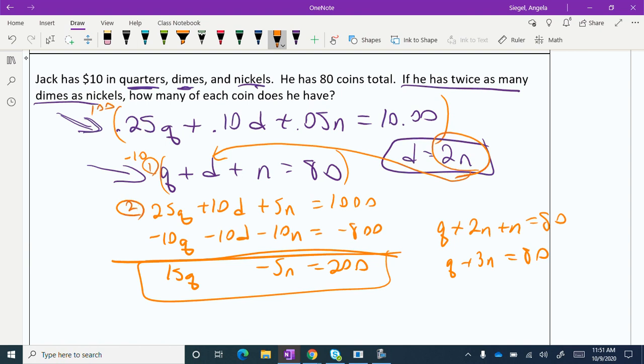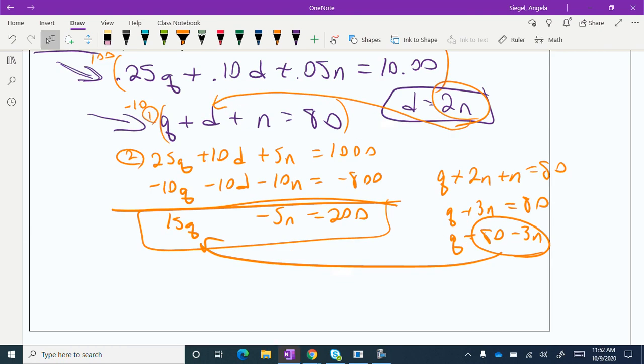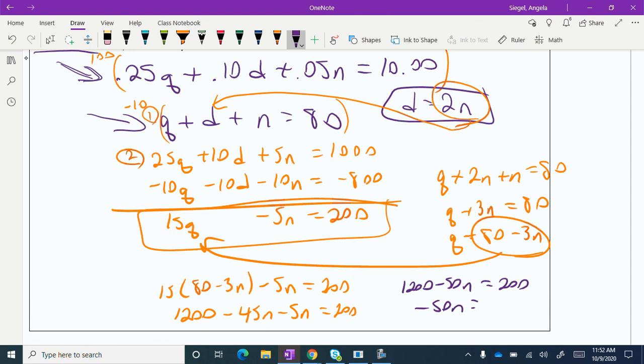I think what I'll do is I'll solve for Q and plug that in right there. I think that's going to get us what we need. Notice when I'm doing these, it's just kind of like a puzzle. There's not really one right or wrong way to do it, just however you see it. I just see it this way. 1200 minus 50N is 200. And so negative 50N equals, I'm going to take 200 minus 1200, so negative 1,000. And divide by negative 50, so N equals 20. So I know that there are 20 nickels.